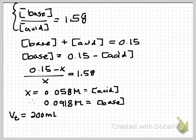So we can then figure out how many moles of the acid that we need and how many moles of base. So we get 0.0116 moles of acid.